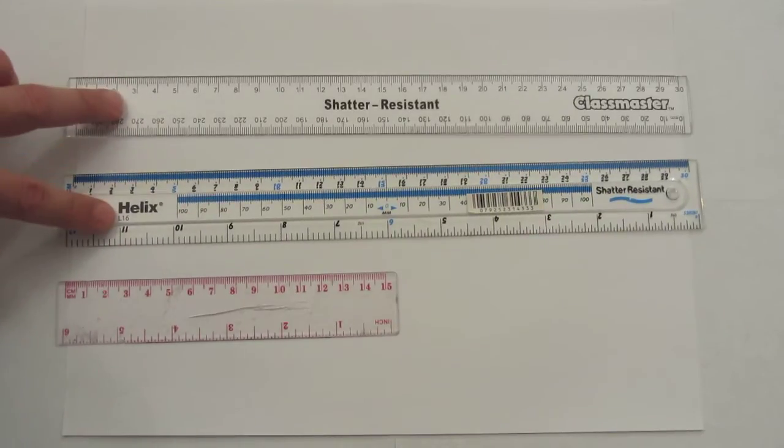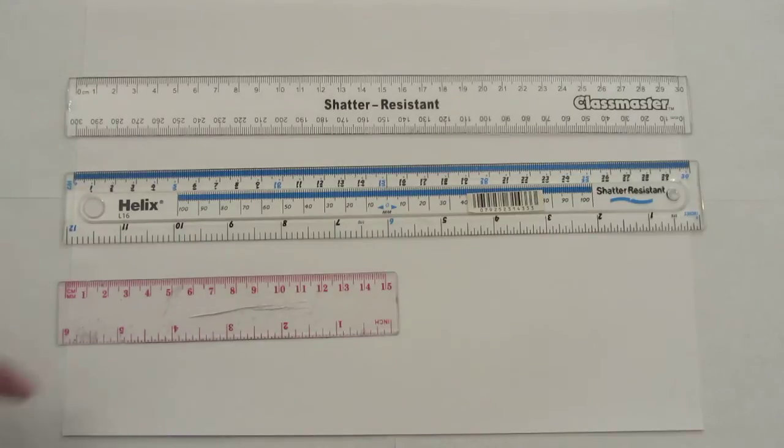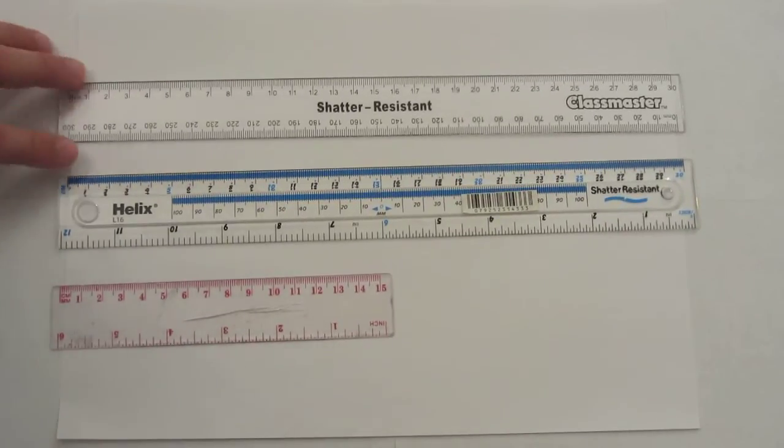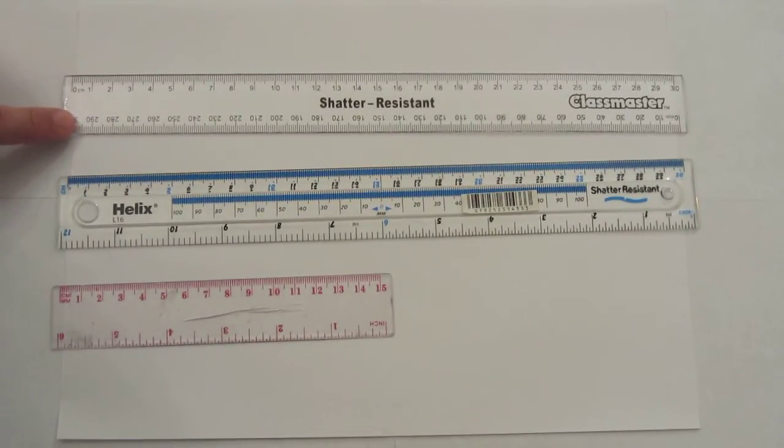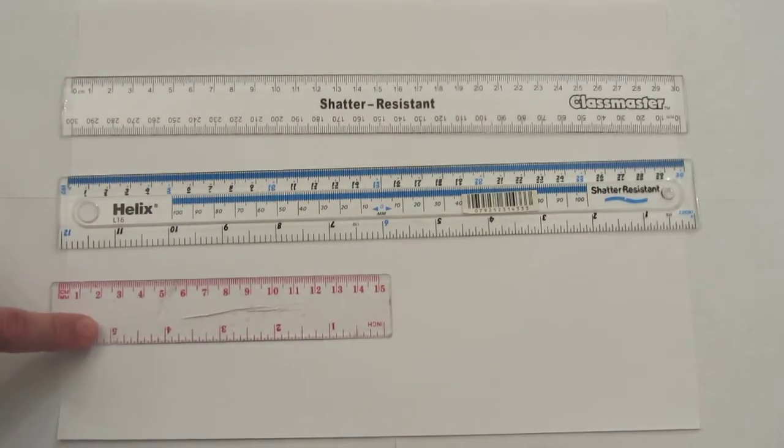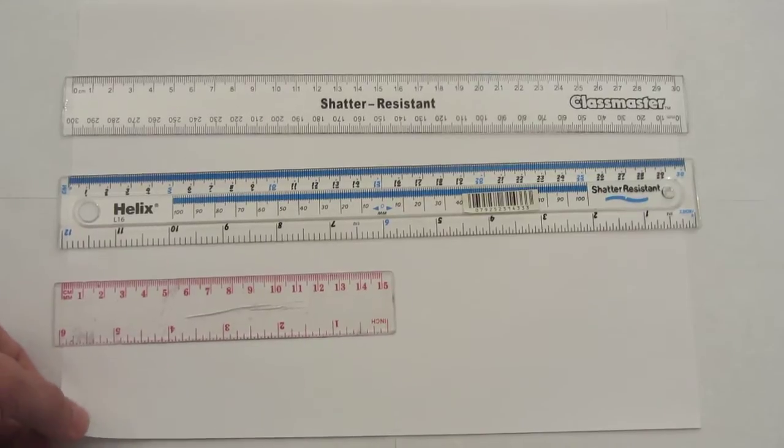Here I've got two 30cm rulers and one 15cm ruler. And you can see from the piece of A4 paper that they're sitting on that a 30cm ruler is about the length of the paper, and therefore the 15cm ruler is about half the length of the paper.